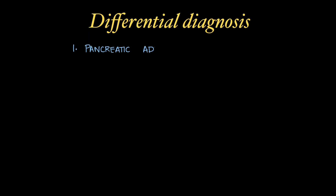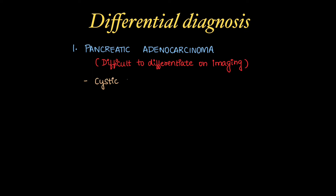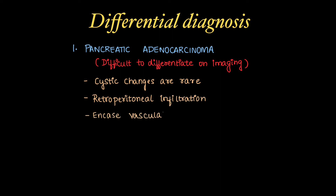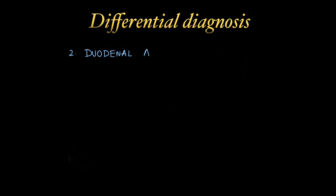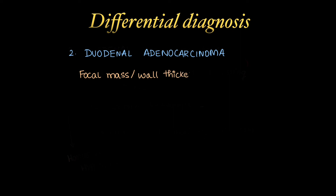Coming to the most important part — the differential diagnosis of groove pancreatitis. First is pancreatic adenocarcinoma, which is very difficult to differentiate on imaging alone. In pancreatic adenocarcinoma, cystic changes are rare, retroperitoneal infiltration is more common, vascular encasement is more common, and duodenal wall thickening is not commonly associated. Adenocarcinomas appear as homogeneously hypodense lesions. Next is duodenal adenocarcinoma, which can present as a focal mass or wall thickening of the duodenum — use coronal reformats to localize the lesion to its origin.